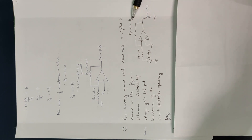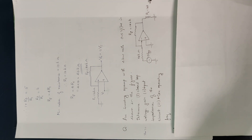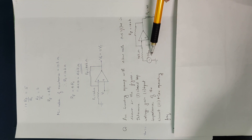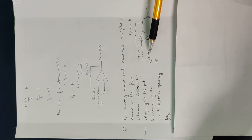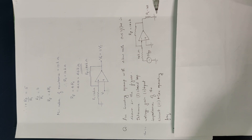Looking at the inverting amplifier circuit in the figure: the feedback resistor Rf is 100 kΩ, the input resistor R1 is 10 kΩ, and the load resistor RL is also 10 kΩ. The supply input voltage is 1 V peak-to-peak.